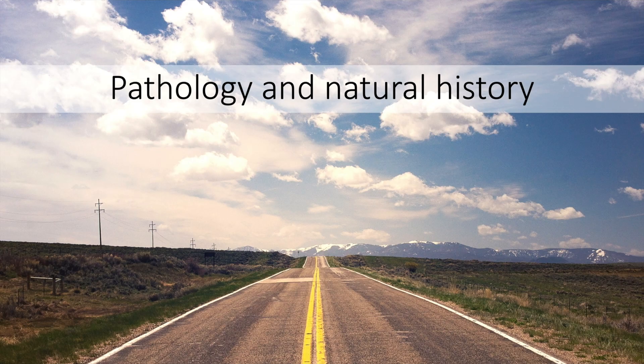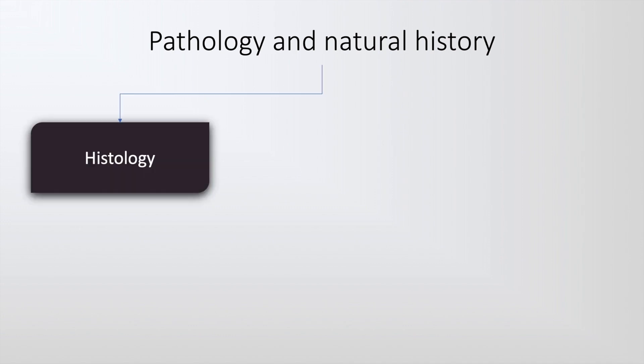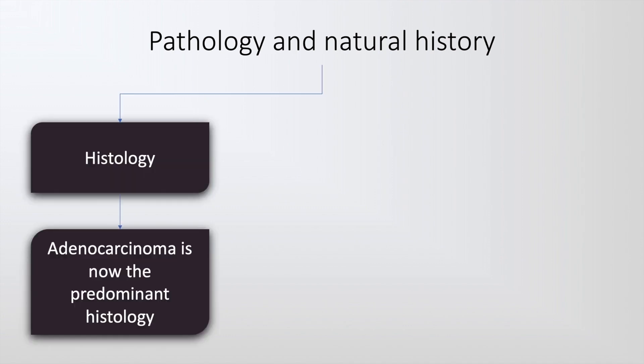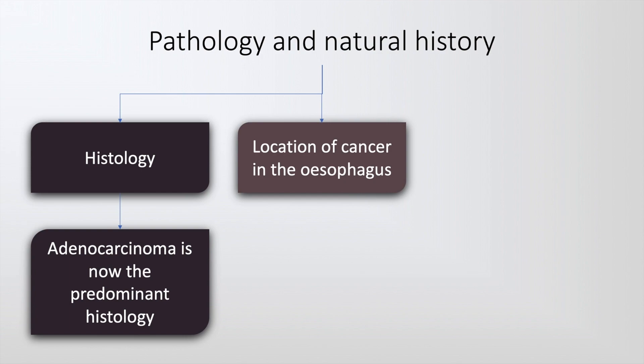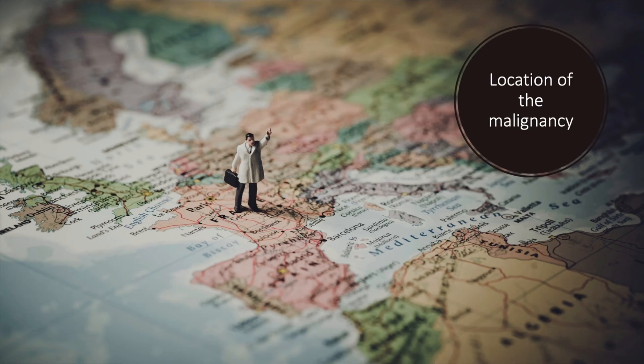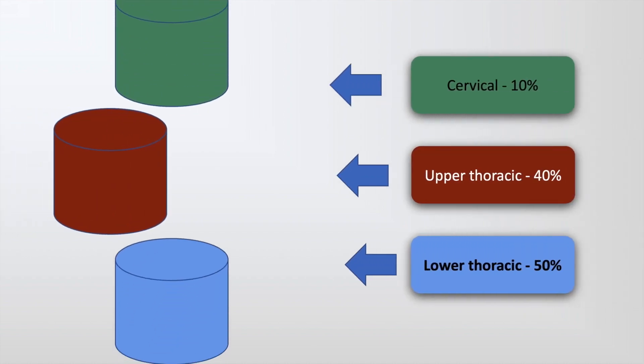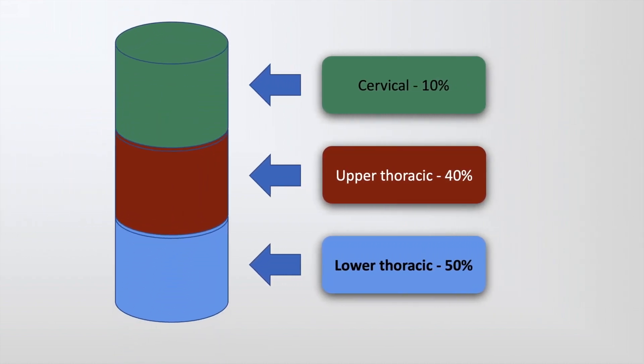The pathology and natural history of esophageal cancer may be discussed with histology. At this time, adenocarcinoma is the most predominant histology. The location of cancer of the esophagus may be classified into those in the cervical region, upper thoracic, and middle thoracic, present in 10%, 40%, and 50% respectively.